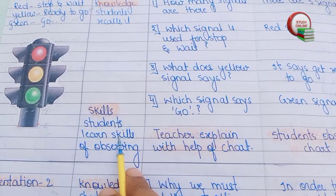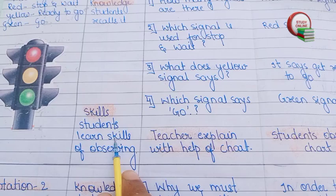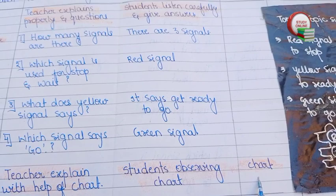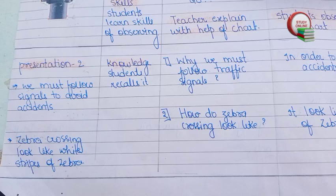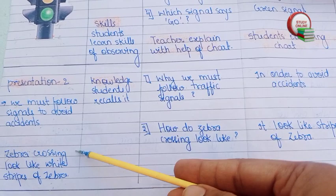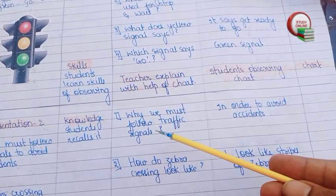We can also draw a diagram on the blackboard. For skills, we have to once again explain to students with the help of any model or chart. Students observe the chart and for the teaching aid we write 'chart.' Now here you can see presentation two — we must follow signals to avoid accidents. We have to follow the same process: explain for about five to six minutes, covering all the main points we have to teach to students.